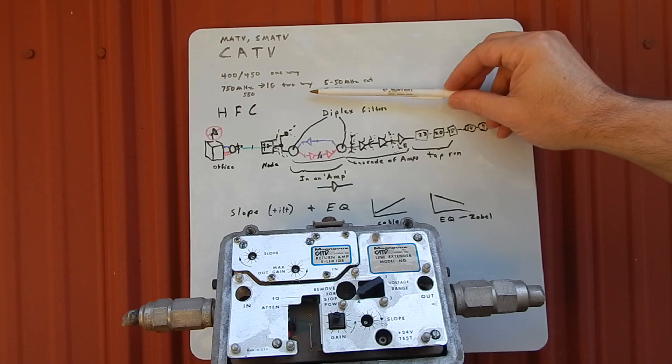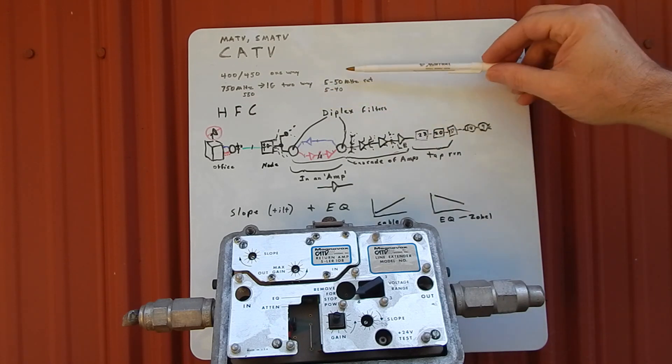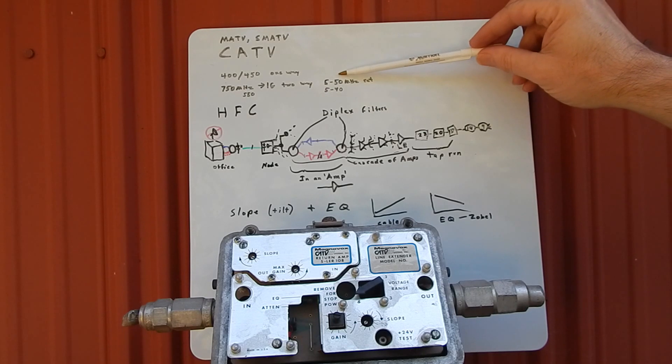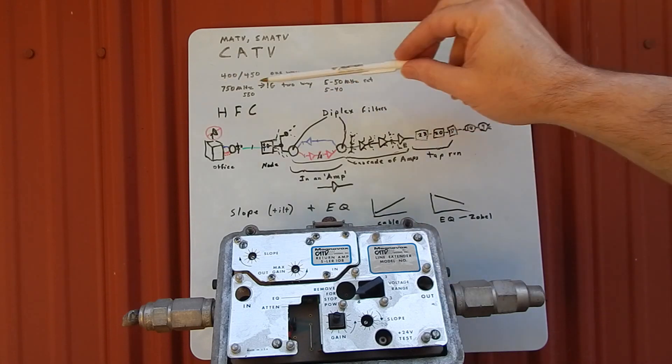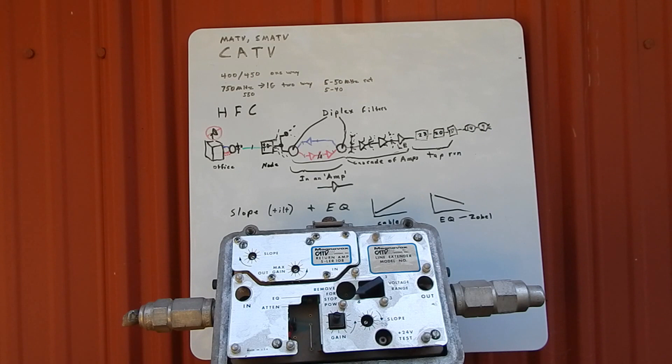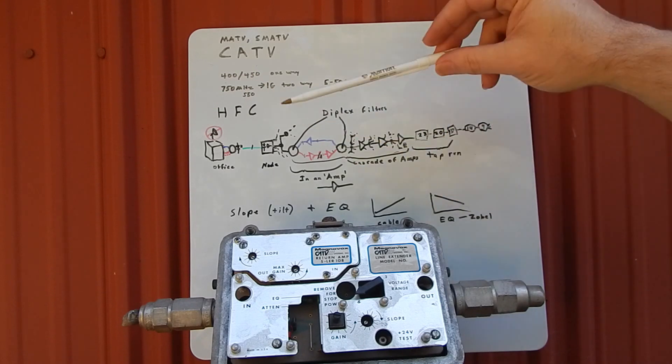We were building our systems up to one gigahertz standards, and we had a 5 to 50 megahertz return spectrum, which I'll start explaining. It's a two-way system, needs a return spectrum. Channel 2 starts at about 54 megahertz—it's the lowest channel we use. So systems that are smart use that bottom spectrum for return.